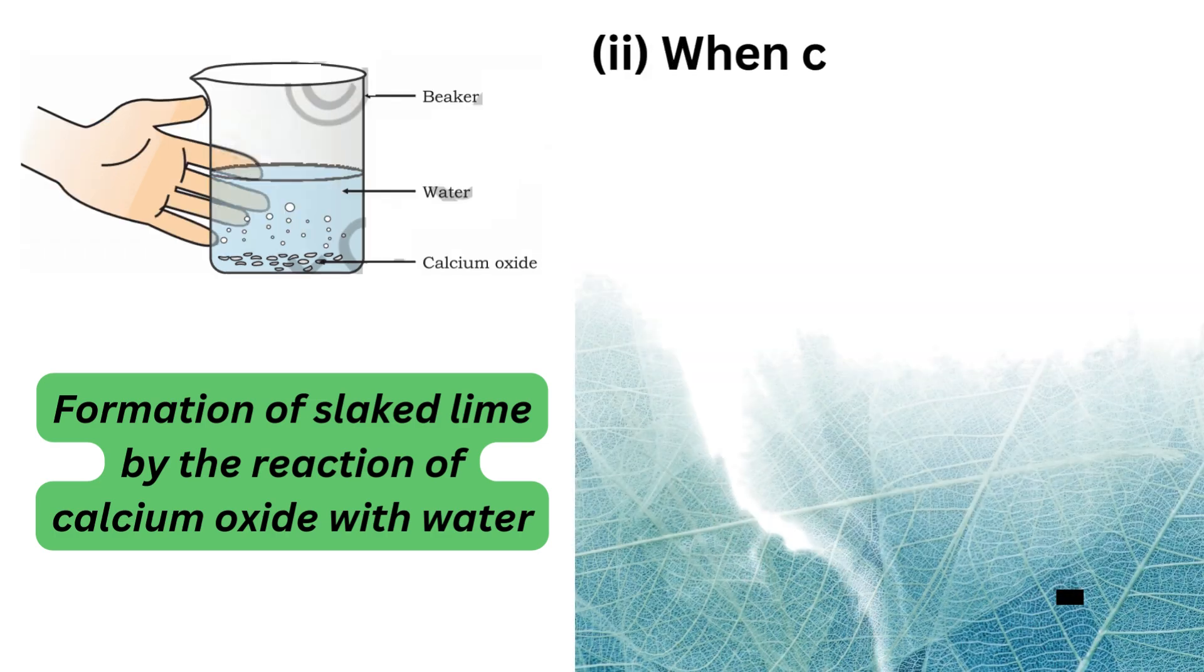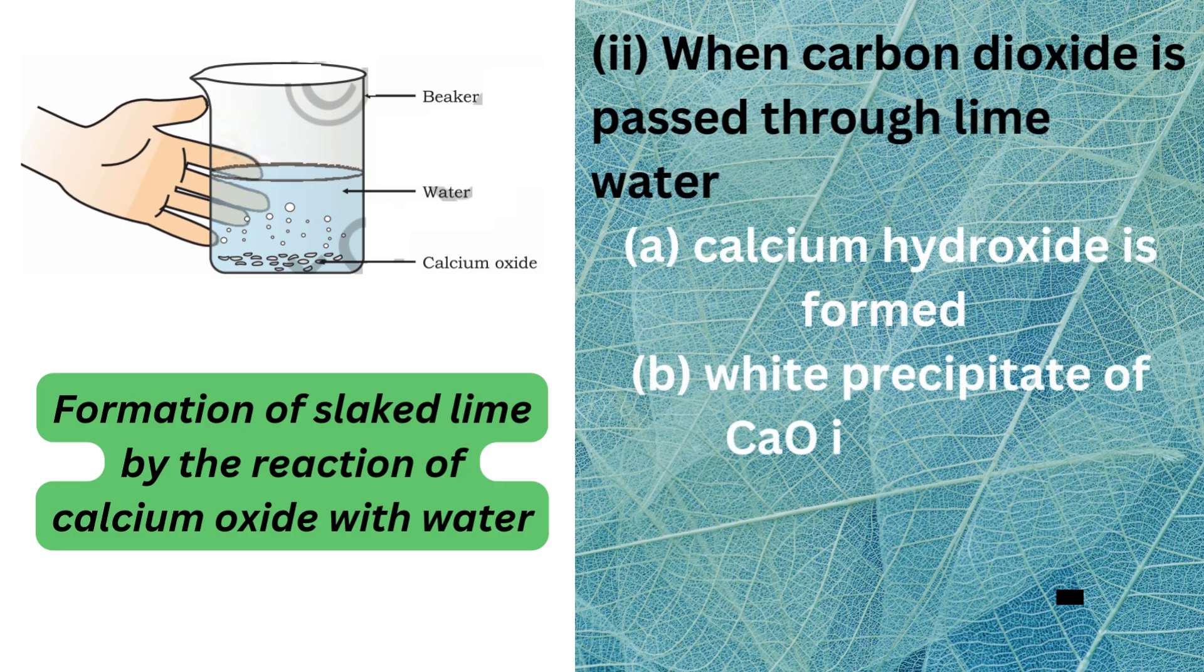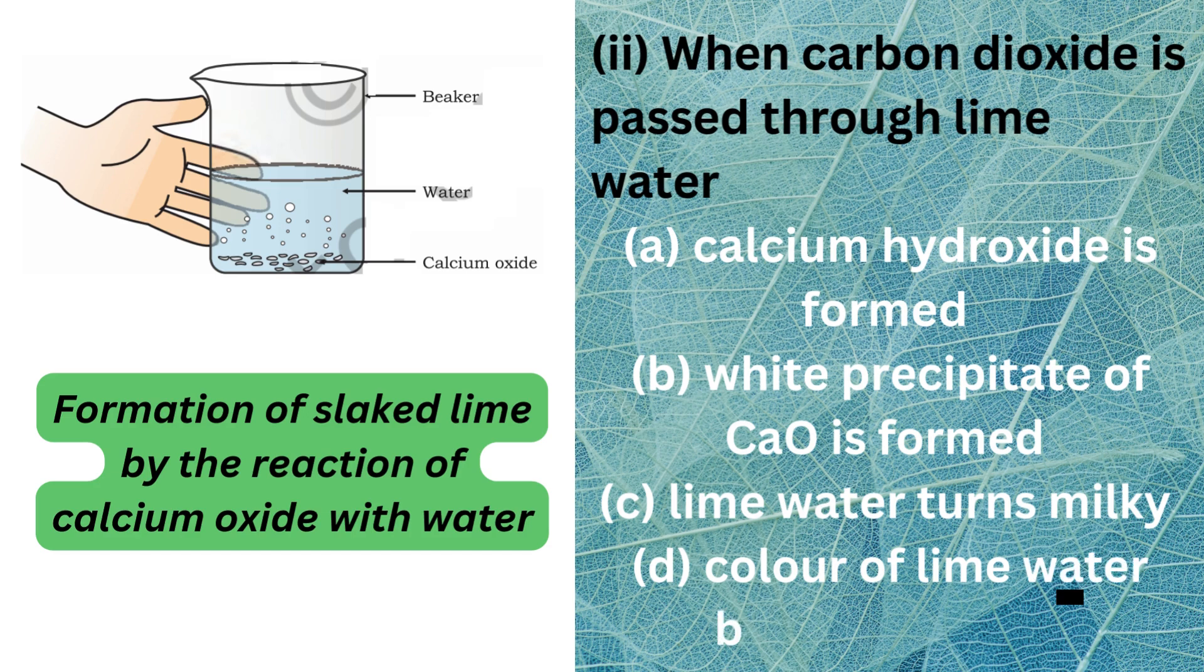Question 2: When carbon dioxide is passed through lime water, A. Calcium Hydroxide is formed, B. White precipitate of calcium oxide is formed, C. Lime water turns milky, D. Color of lime water becomes green.